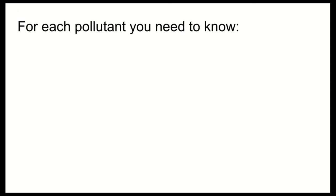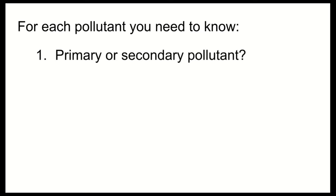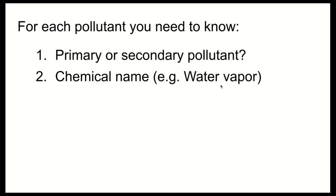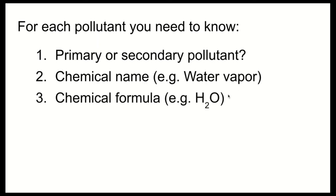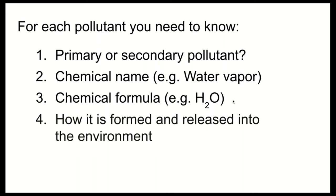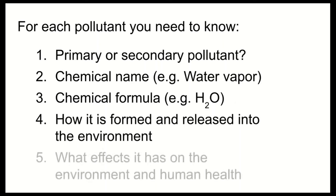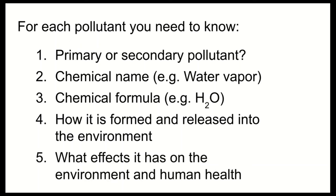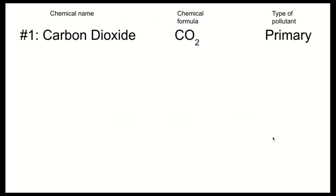For each pollutant, you'll need to know whether it's primary or secondary, its chemical name and formula, how it's formed and released, its environmental effects, and its human health effects. You can set this up as a five-column chart. Our first primary pollutant is carbon dioxide, CO2 — one carbon atom and two oxygen atoms. It is formed through all combustion.